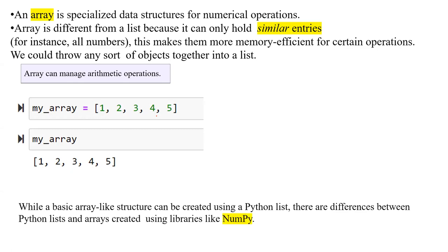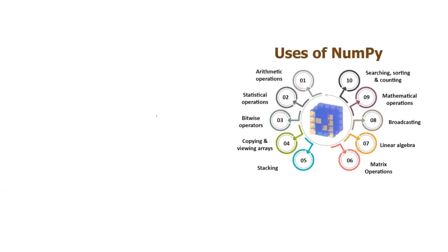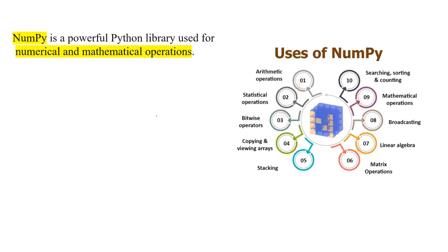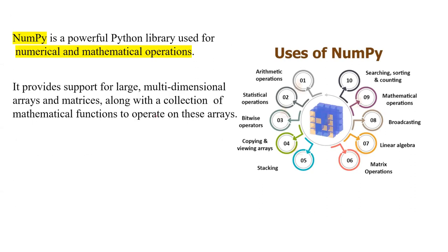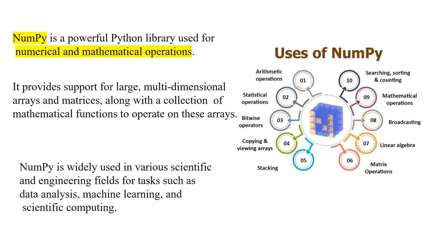While a basic array-like structure can be created using a Python list, there are differences between Python lists and arrays, especially when we are using NumPy. As you remember at the beginning of the course, we talked about NumPy library. NumPy is a powerful Python library used for numerical and mathematical operations. It provides support for large multidimensional arrays and matrices. NumPy is widely used in various scientific and engineering fields for tasks such as data analysis, machine learning, deep learning, and so on.